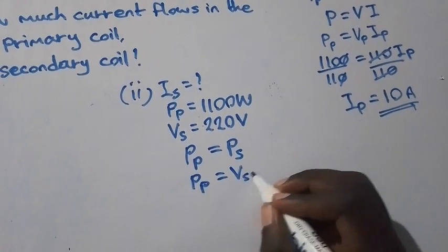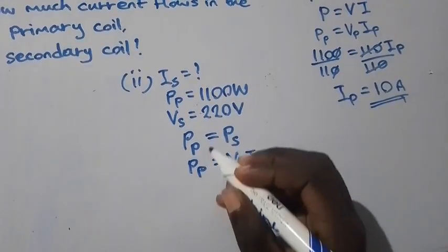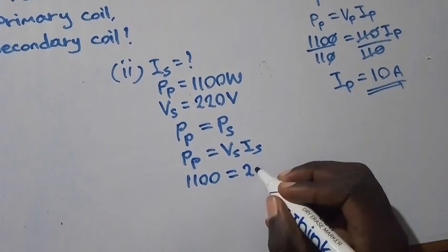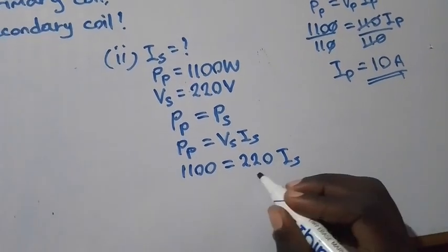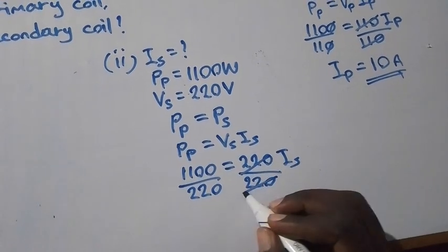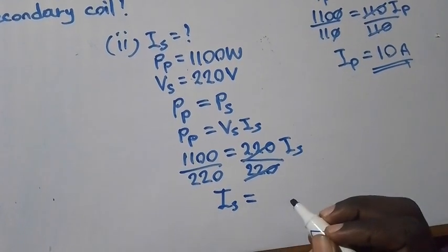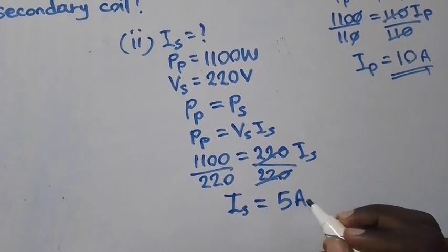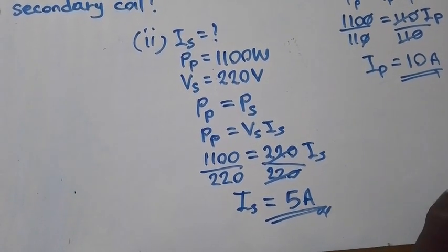So now where there is PP we are going to replace with 1100, equal to VS which is 220 times IS. So we divide both sides by 220. IS will be equal to 220 into 1100, which is 5 amps. So it is the current passing through the secondary coil.